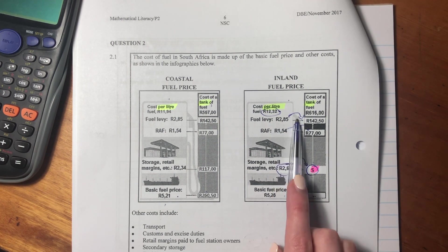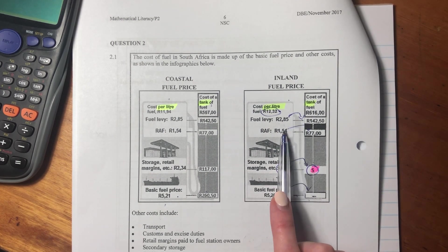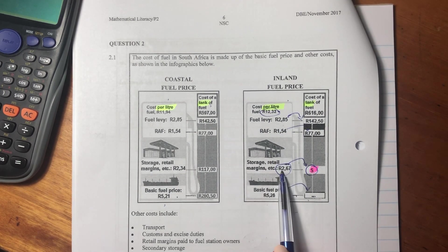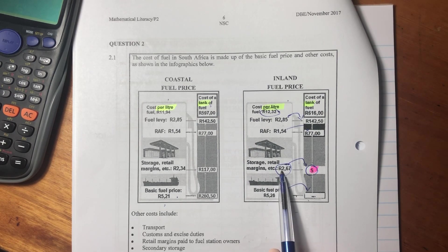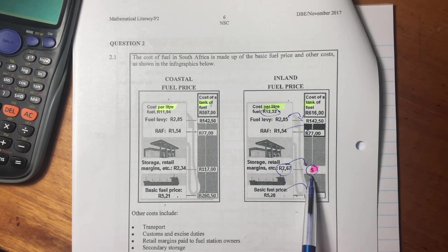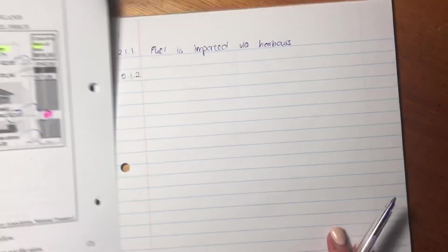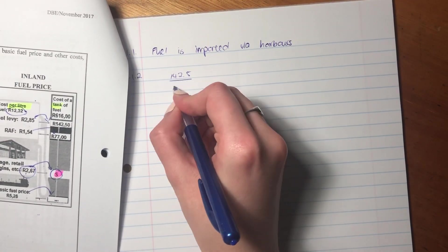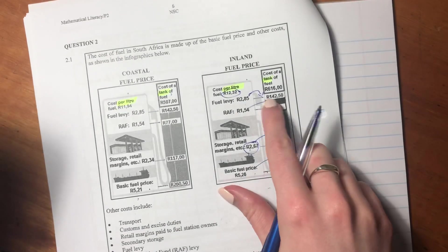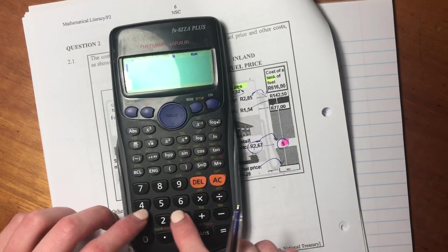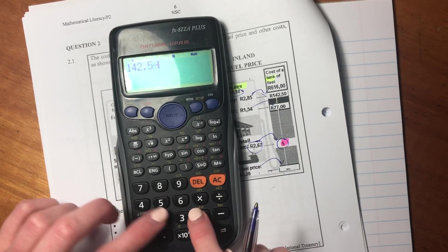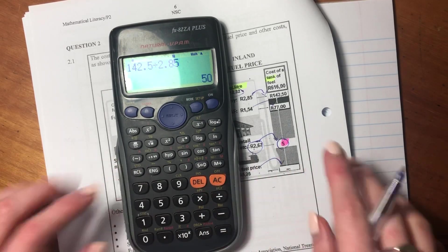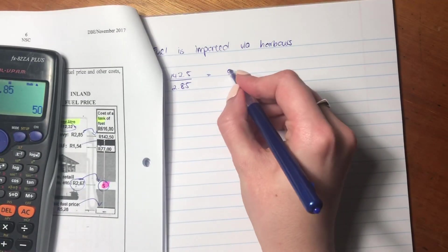So in order to find the number of liters, we need to say what is 142.5 divided by 2.85. And you'll see that whatever the number of liters is, is what you multiply each of the constituent parts of the cost of the liter in order to get the cost of the tank. So let me show you what that means. Let's say 142.5 and let's divide it by 2.85, to see how many liters. 142.5 divided by 2.85, so it is 50, 50 liters.